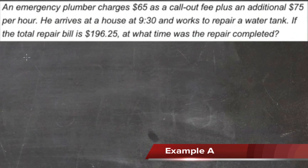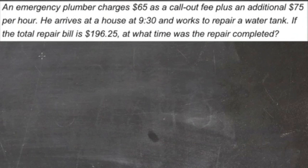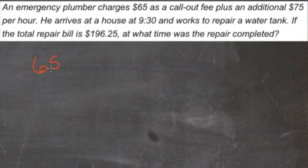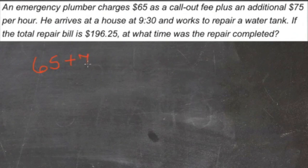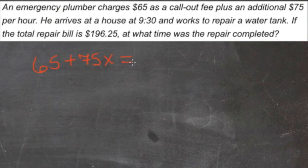This problem has a couple of different steps. First, we need to come up with a formula that allows us to calculate how much time he actually spent there. We know he charges $65 anyway, no matter how much time he spends. Then he charges plus $75 per hour, times some number of hours — we'll let x be that number of hours. So his total charge is $196.25.